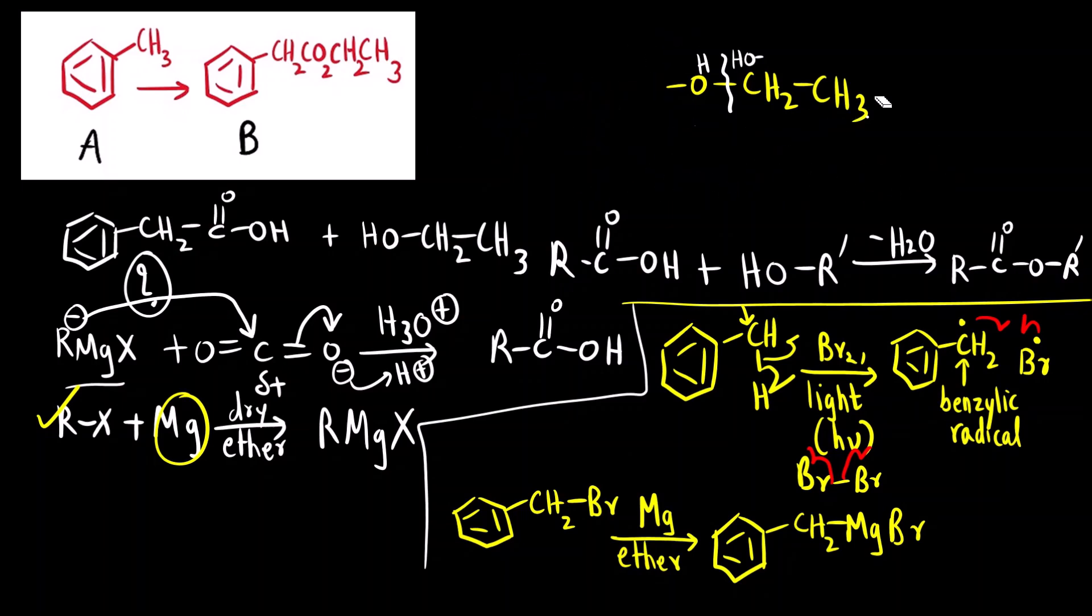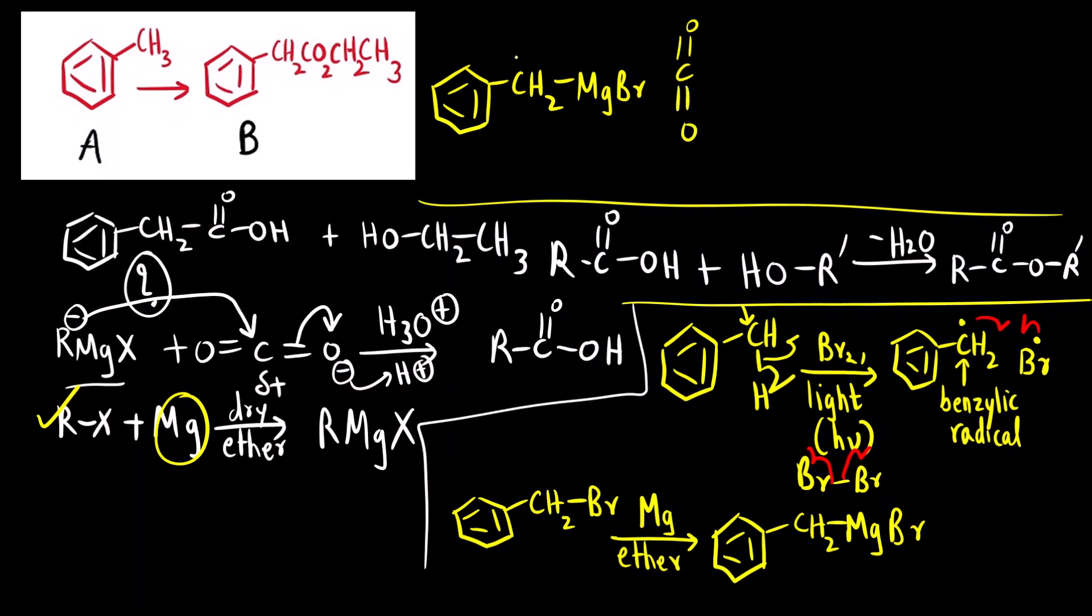Now we can react it with carbon dioxide and then acidic workup to form carboxylic acid. This Grignard reagent, CH2MgBr, can react with carbon dioxide. This is negative. This bond is, this electrons will attack here. This will open up and then after acidic workup, what we will get is our carboxylic acid CH2C double bond OOH.